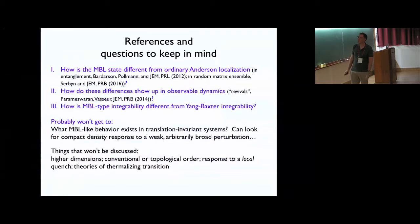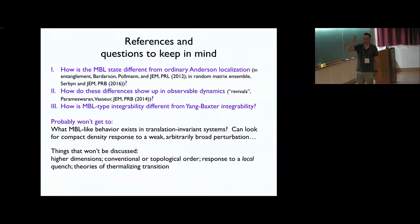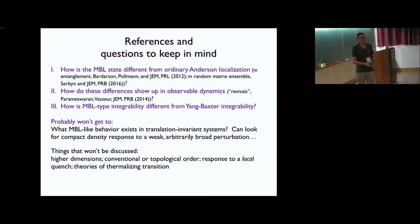I'm going to focus on a couple of questions about MBL. How is this many-body localized phase different from ordinary Anderson localization? I'll first talk about that in terms of entanglement, and then how you can actually measure it. There is a notion of integrability — an infinite number of conserved charges — in MBL-type systems, but it seems very different from Yang-Baxter-type integrability. I don't think we fully understand what's the same and what's different yet. Theories of the transition in particular are very active and very hard.